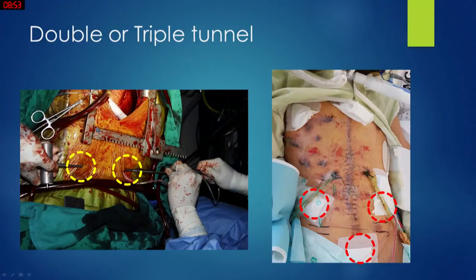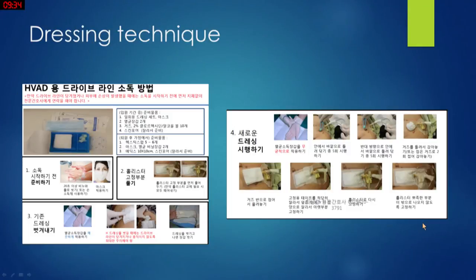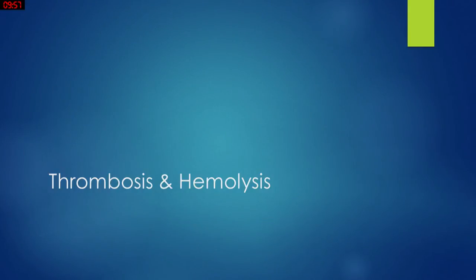Here are examples of the double and triple tunnel technique. In the double tunnel approach, we initially pull out the driveline and then make another exit. In the triple tunnel technique, we pull it out again one more time, giving us more room to relocate the driveline exit site. We have also created an education brochure for patients, caregivers, nurses, interns, and residents to maintain a standardized dressing approach, which we feel is really helpful in preventing driveline infection.